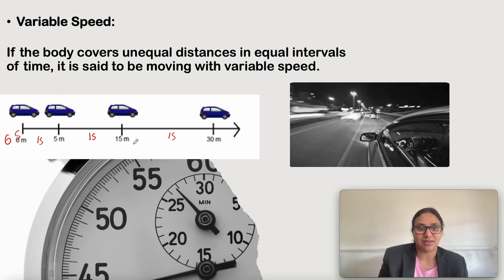Next is instantaneous speed. What is instantaneous speed? The name itself indicates the speed of an object at a particular instant of time. As you can see in this picture, the speed of this athlete at a particular instant of time — we call it instantaneous speed. We define it more accurately as the speed of an object under motion at a specific point in time.